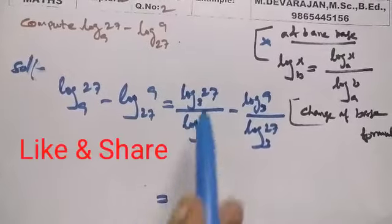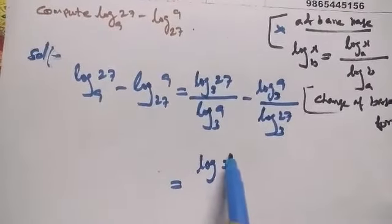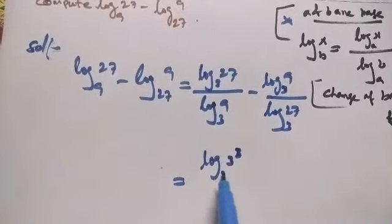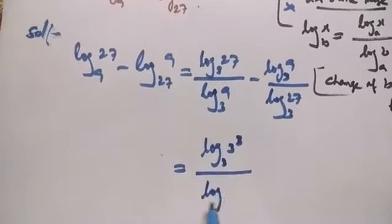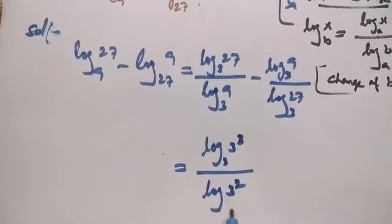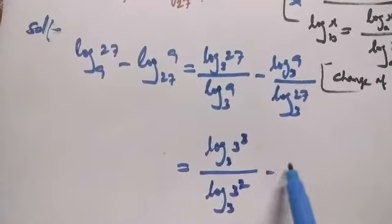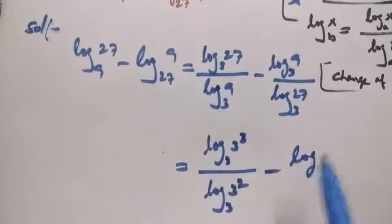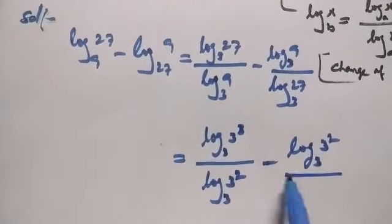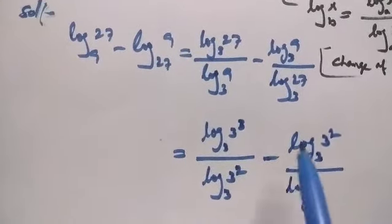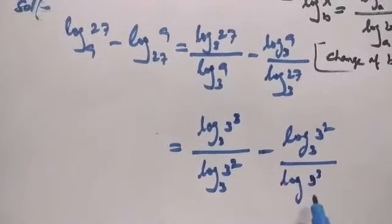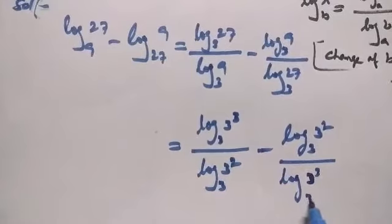Since 27 equals 3 to the power 3, we can write log 3 to the power 3 to the base 3, divided by log 9 to the base 3, minus log 9 to the base 3 divided by log 27 to the base 3.